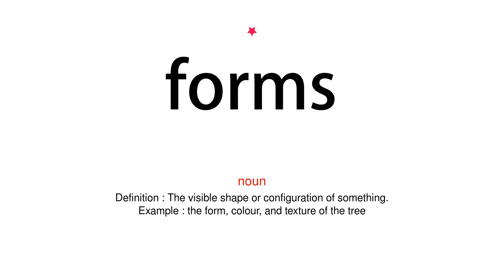Noun. Definition: The visible shape or configuration of something. Example: The form, color, and texture of the tree.